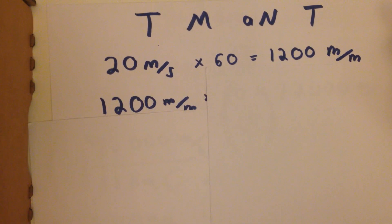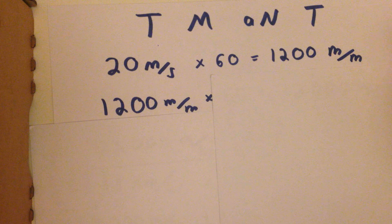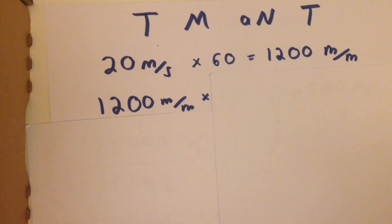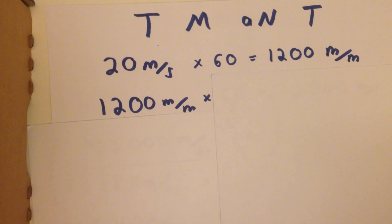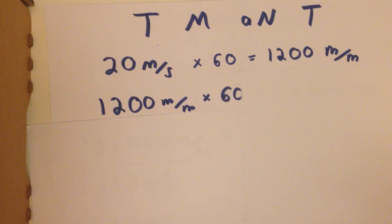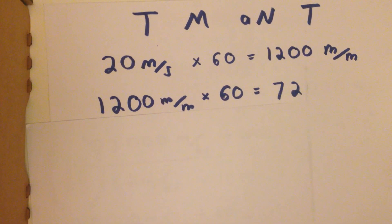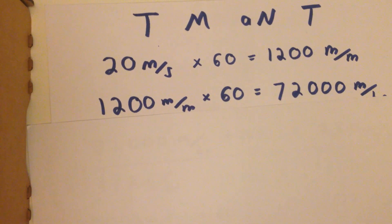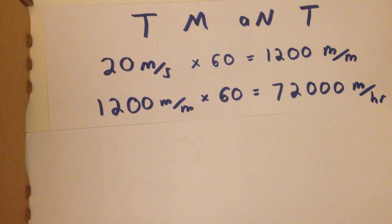but we need to keep going. If you can go that far in a minute, how far can you go in an hour? Well, there's 60 minutes in an hour, so we times by 60 and we get 72,000 meters per hour.